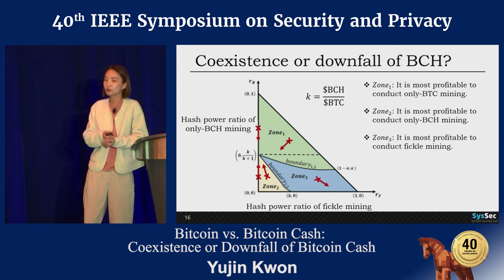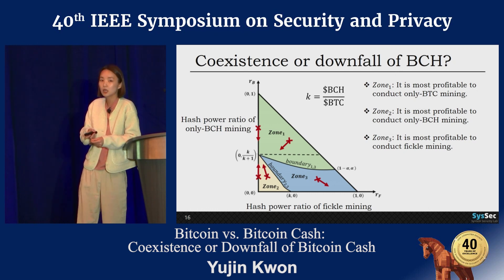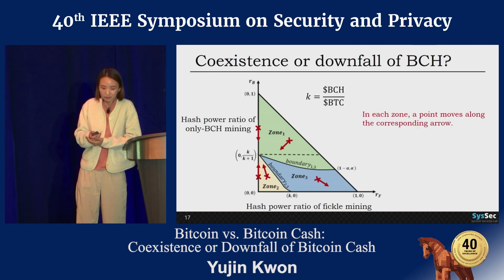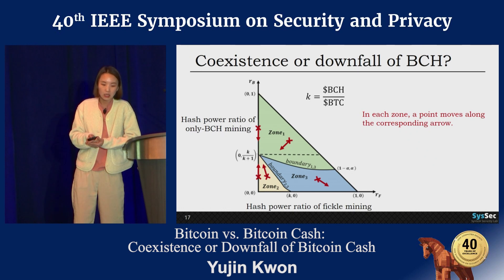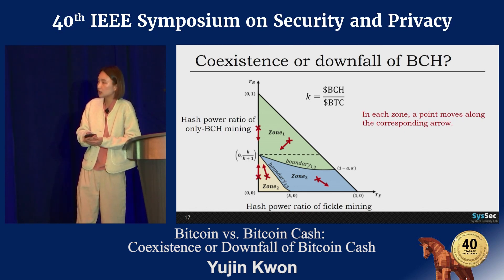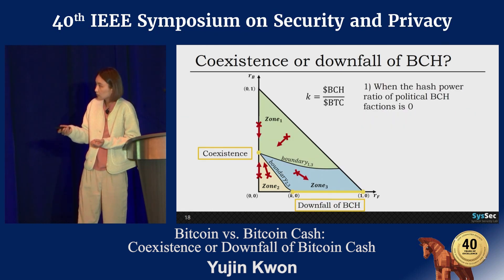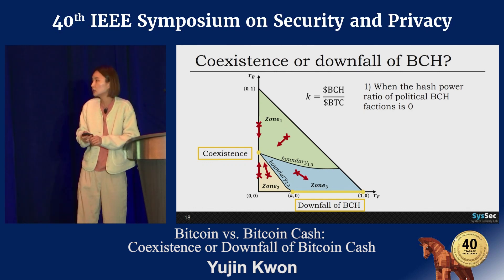We can divide into three zones depending on strategy profitability. In the first zone, it's most profitable to conduct only BTC mining. In the second zone, it's most profitable to conduct only BCH mining. In the third zone, it's most profitable to conduct fickle mining. According to the zone definitions, the state moves along corresponding arrows. In zone one, since only BTC mining is most profitable, miners change their choice to only BTC mining, and the arrow goes south-westward.